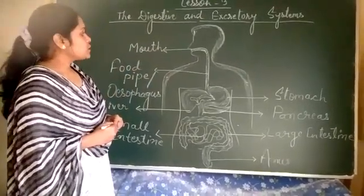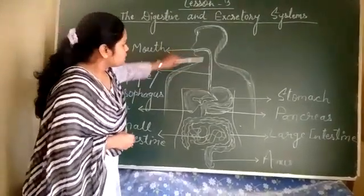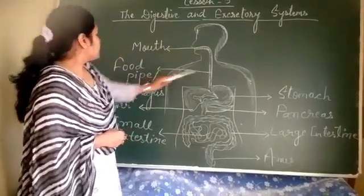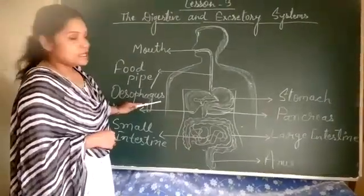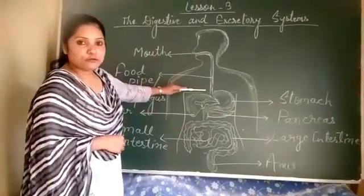Now come to next organ. This portion is called food pipe and food pipe is also called esophagus. It is used to swallow the food.